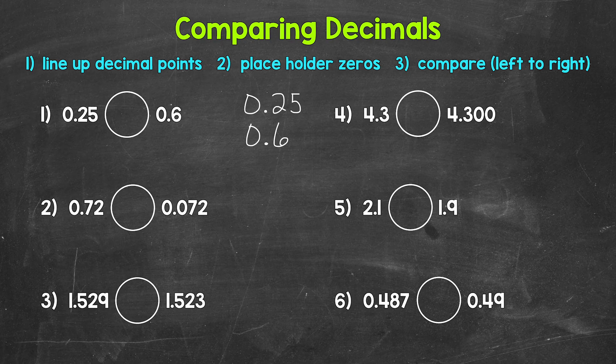Since 25 hundredths goes to the hundredths place, let's use a placeholder zero here so that this decimal goes to the hundredths place as well. Now this looks a little more lined up and neater, and it can also help us compare. Once we have our decimal points lined up and we use placeholder zeros, we compare digits from left to right, going place by place.